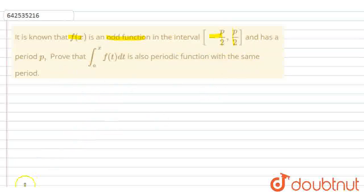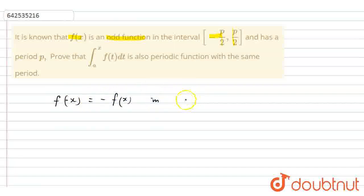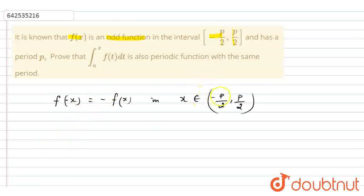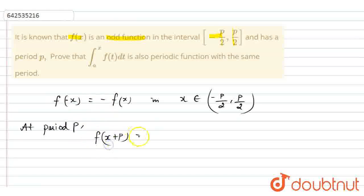So I am going to write the given conditions here. So, f of minus x is equal to minus of f of x, in the interval x belongs to minus p by 2, comma p by 2. Because it is an odd function. So p is the interval, and at period p, f of x will become f of x plus p equal to f of x.